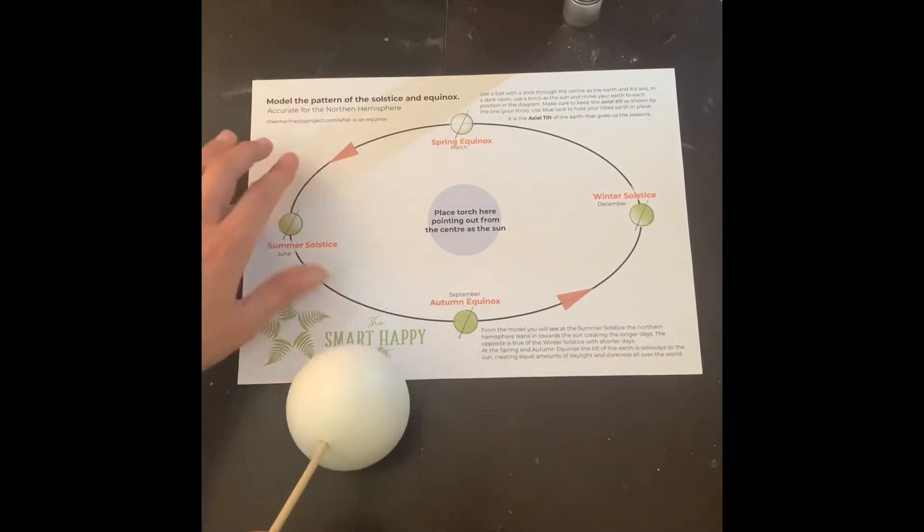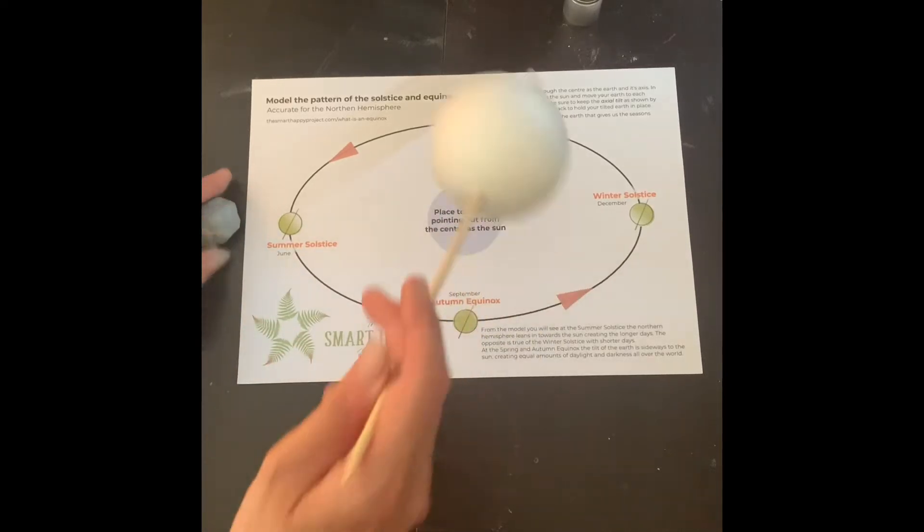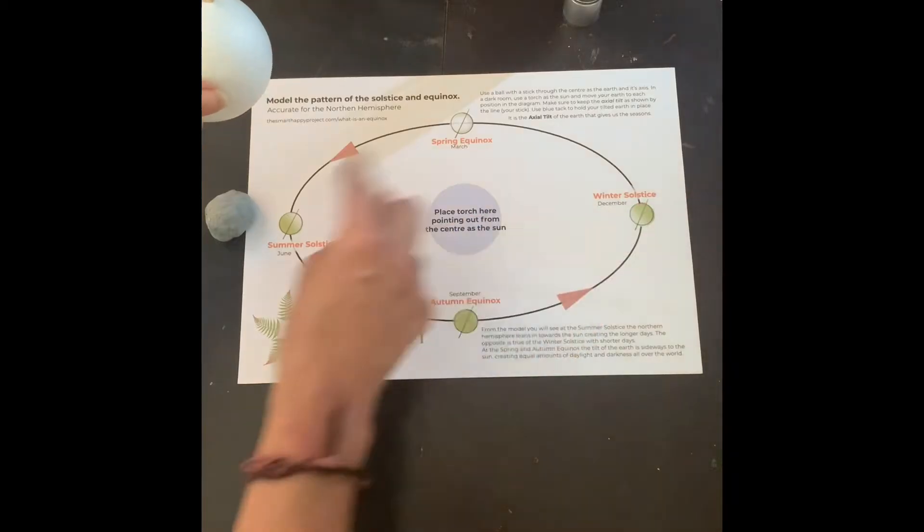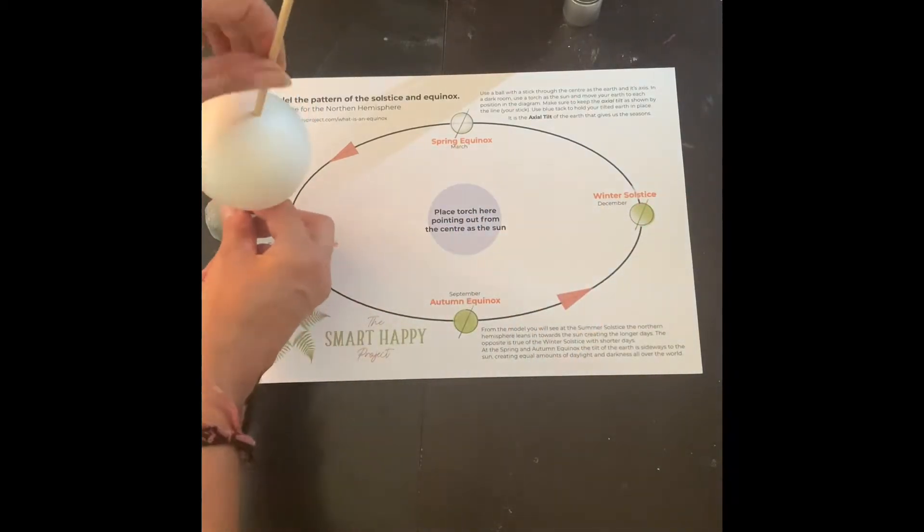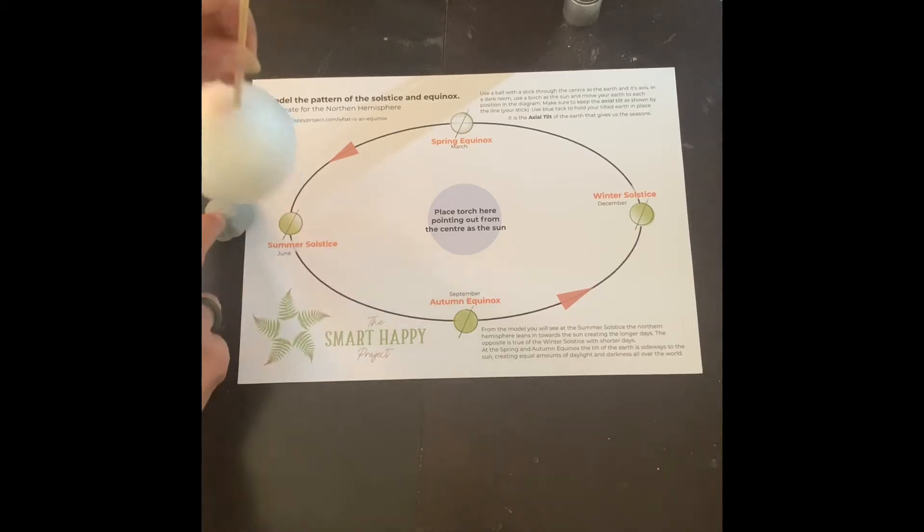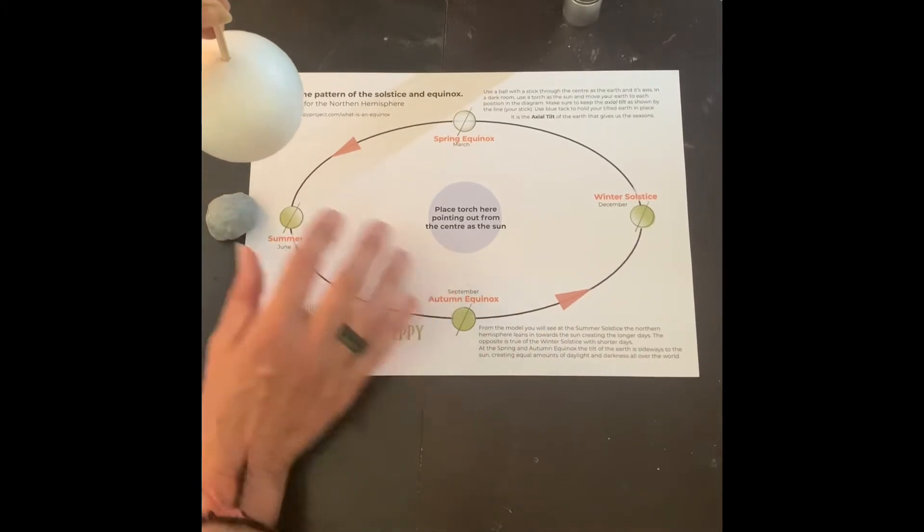So if you're in the southern hemisphere the winter and summer solstice are swapped, and so with the equinoxes. So I'm going to put my blue tack to the left of the summer solstice here, sticking on the table.